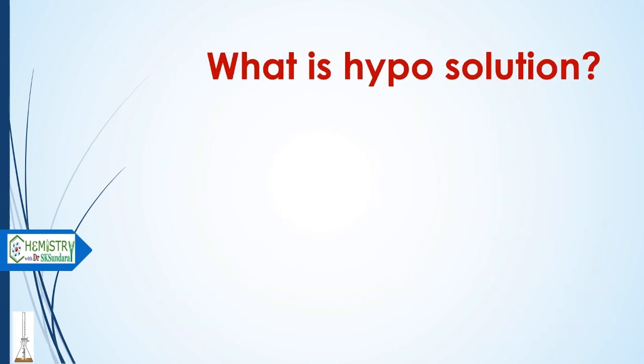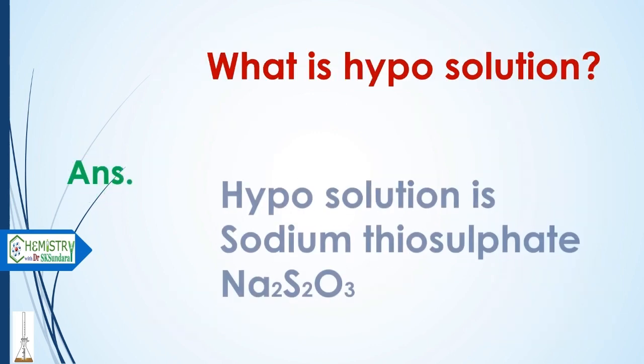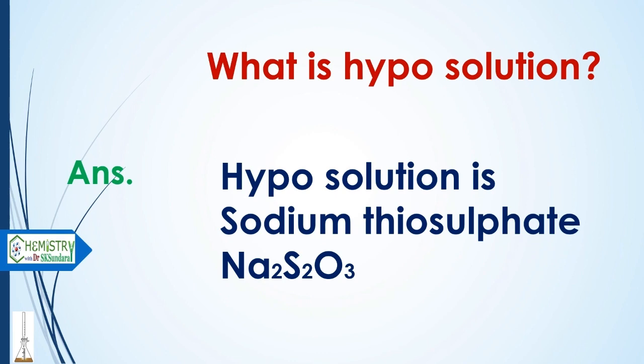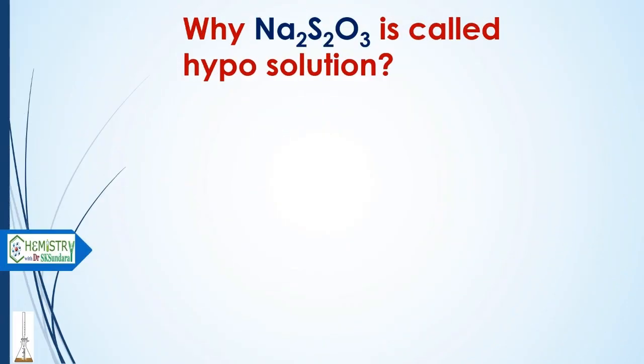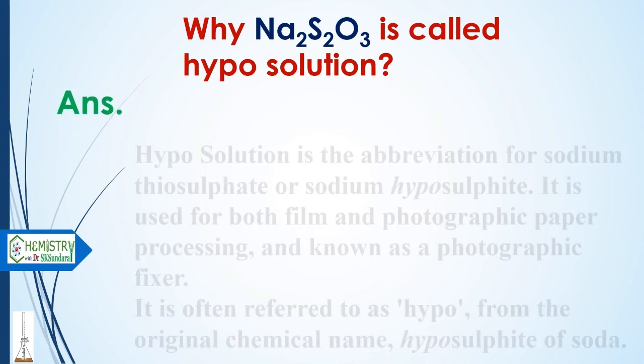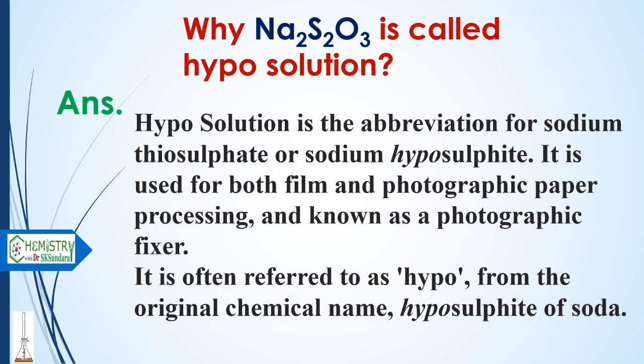What is hypo solution? Hypo solution is sodium thiosulfate. Why is sodium thiosulfate called hypo solution? Hypo solution is the abbreviation for sodium thiosulfate or sodium hyposulphite. It is used for both film and photographic paper processing and is known as a photographic fixer. It is often referred to as hypo from the original chemical name hyposulphite of soda.